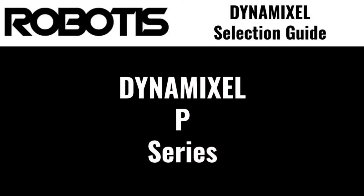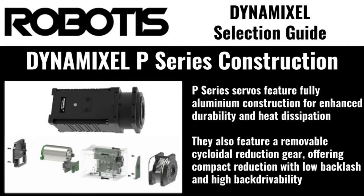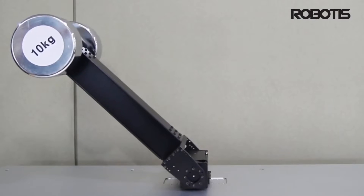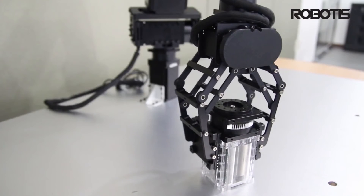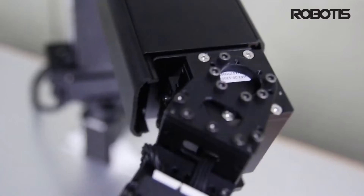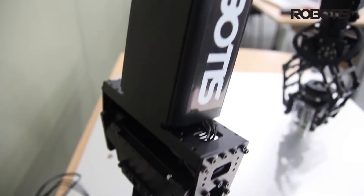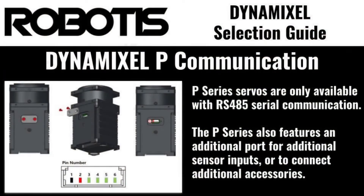Now that we've gone over the Dynamixel X-Series lineup, it's time to talk about Robotis's high-performance product lines. Dynamixel P-Series servos are Robotis's current flagship robot actuators, providing the highest performance and precision available from the Dynamixel family. P-Series servos feature all-aluminum construction and integrated cycloidal gear reduction, providing compact and low-backlash operation without impacting back-drivability. The P-Series also features the most precise encoders of any Dynamixel model, offering one million steps of movement resolution, plus four external input ports for connecting additional sensors, accessories, or third-party components. P-Series actuators are available in three sizes and a variety of output power levels.